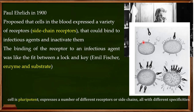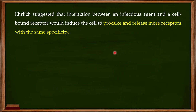This concept of interaction between side chain receptors and the infectious agent was actually inspired by Emil Fischer's lock and key model, which explained the interaction between an enzyme and a substrate. Fischer's opinion was that the enzyme and substrate fit each other like a lock and key — the same principle applies to the side chain receptors and their interaction with infectious agents.